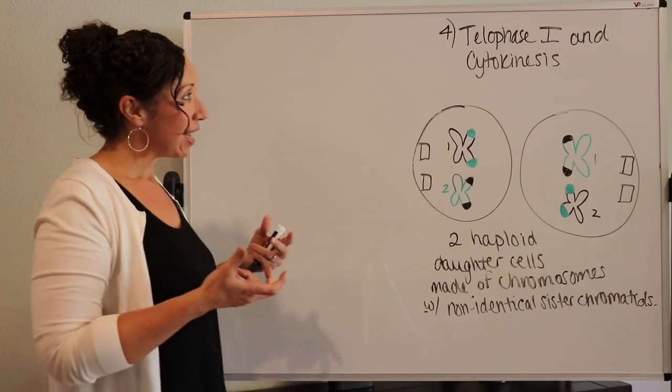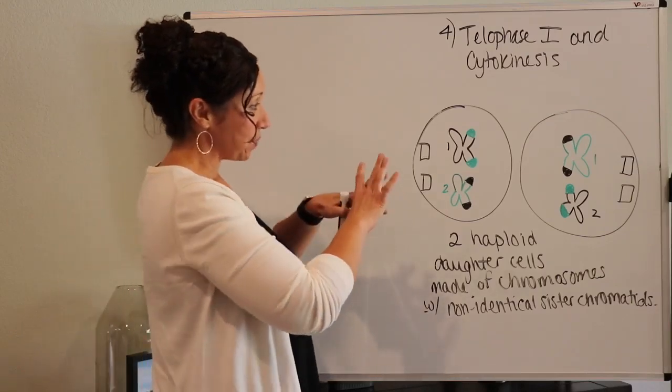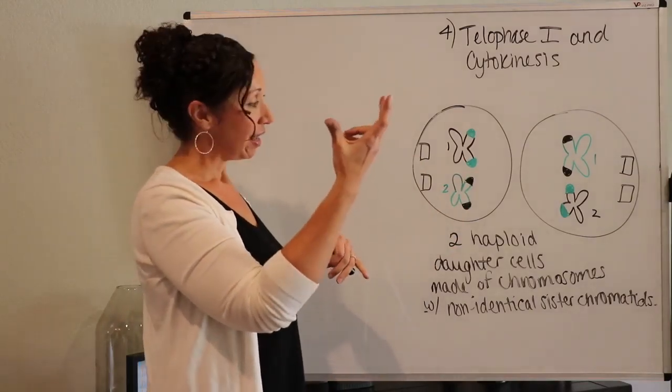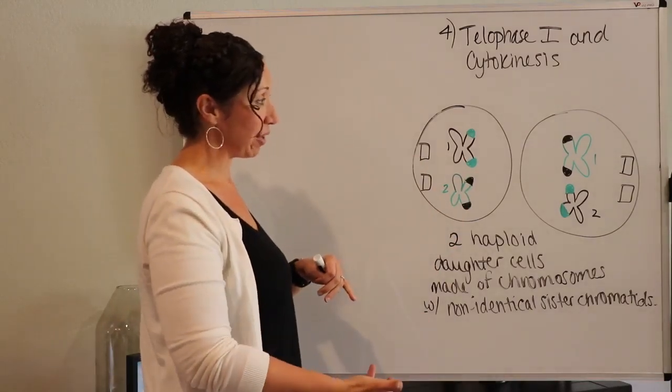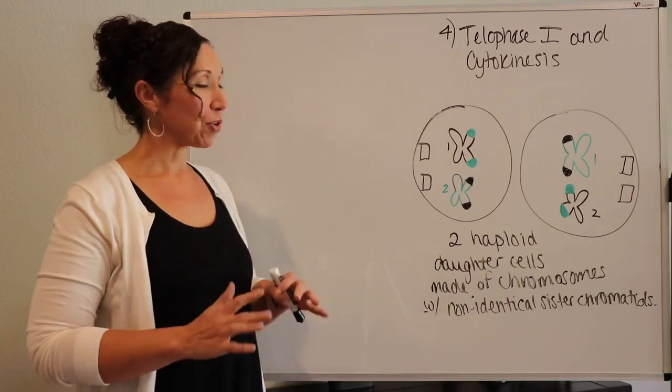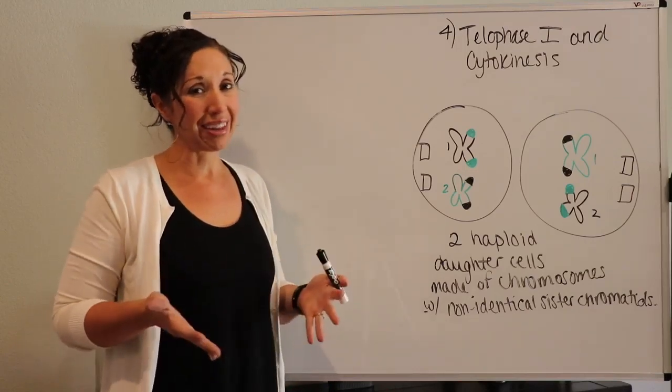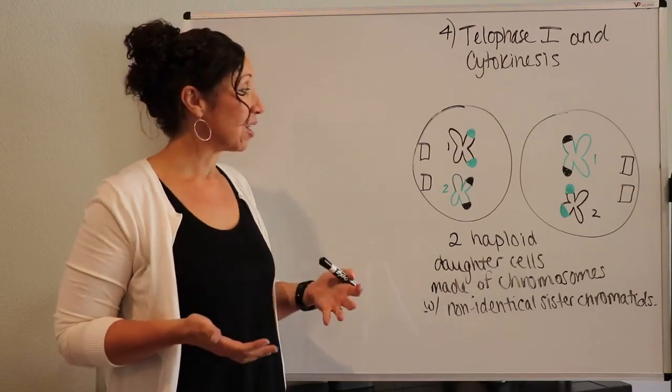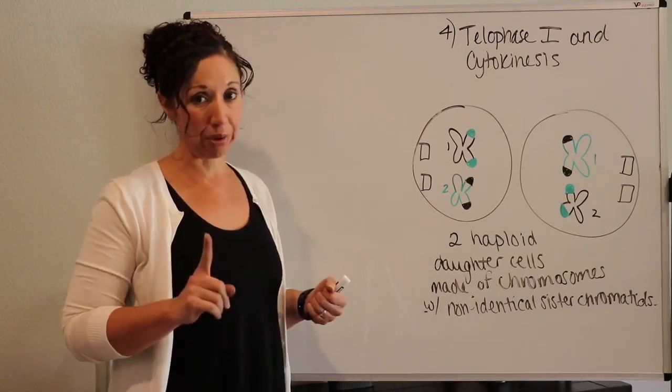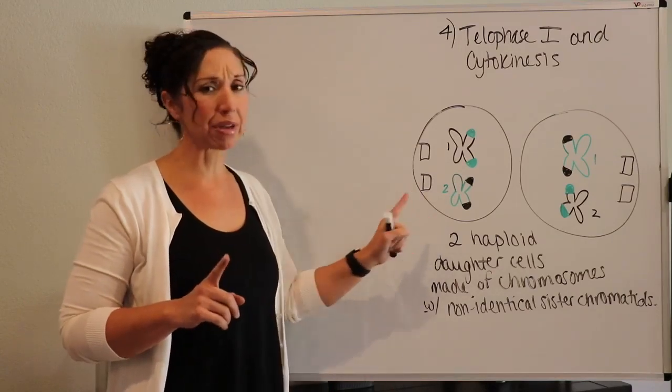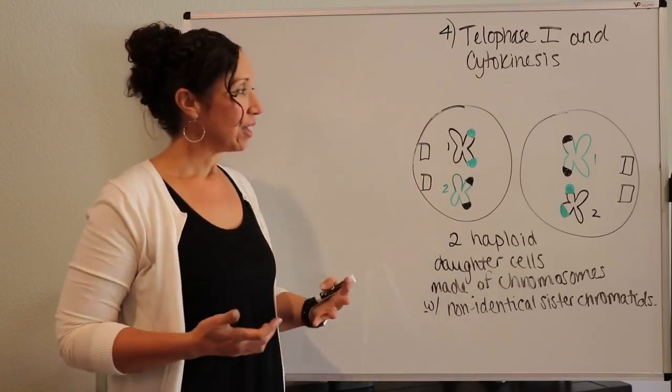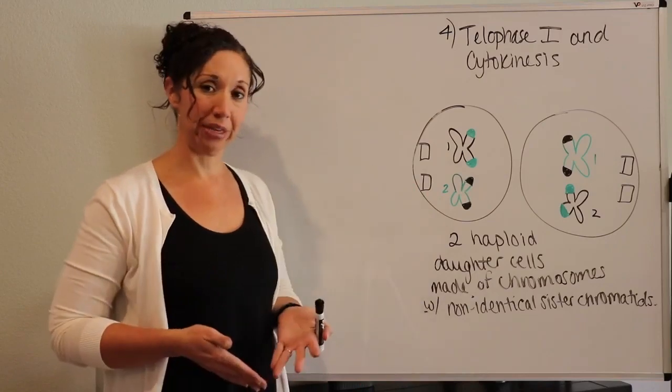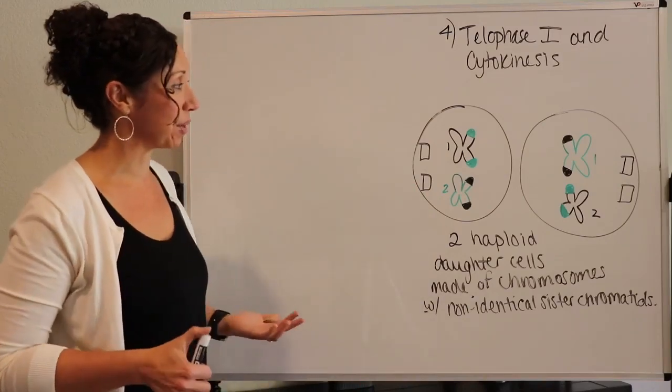And so now we're in the phase where we have two haploid cells. We started with one diploid cell and now we're in the phase of two haploid cells, but these cells are not technically germ or gamete cells yet. They're not functional gamete cells yet. We need to get them down to one chromatid. They can't have two chromatids like that to be functional. So in order to do the one chromatid chromosome cell, we need one more split. And that's where meiosis two comes in.